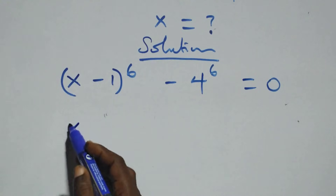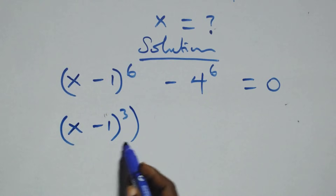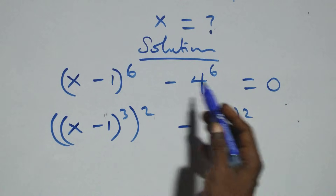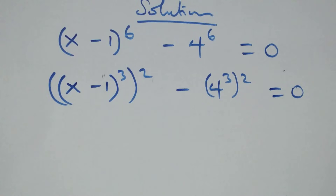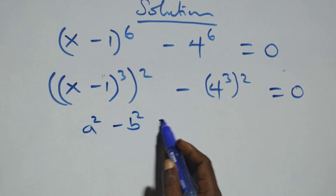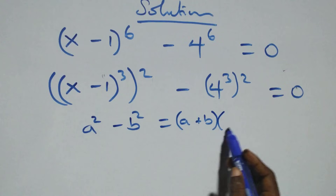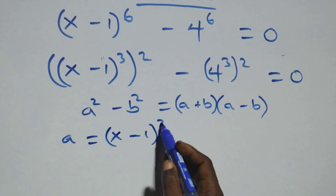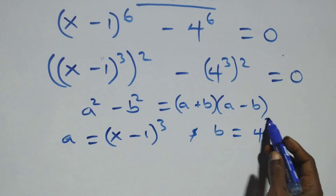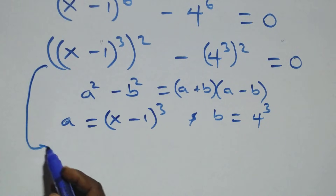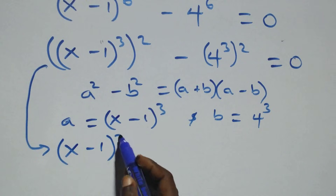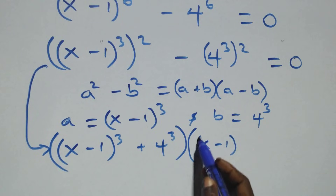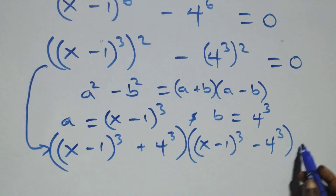We can write this as (x minus 1) raised to power 3, quantity squared, minus 4 raised to power 3, quantity squared, equals to 0. We apply the difference of squares: a squared minus b squared equals (a plus b)(a minus b), where a stands for (x minus 1) raised to power 3 and b stands for 4 raised to power 3. This becomes [(x-1)^3 + 4^3] times [(x-1)^3 minus 4^3] equals to 0.